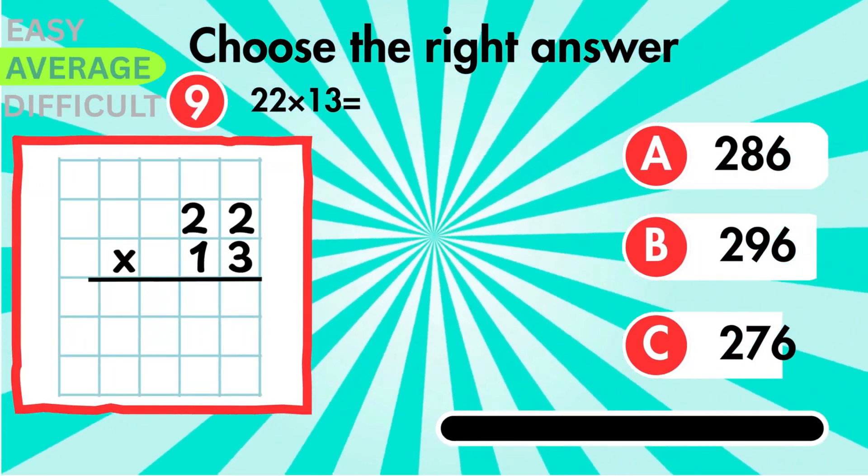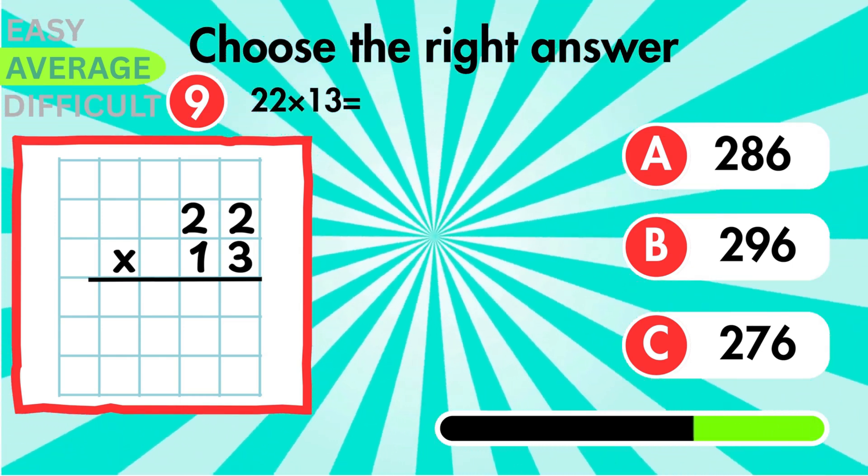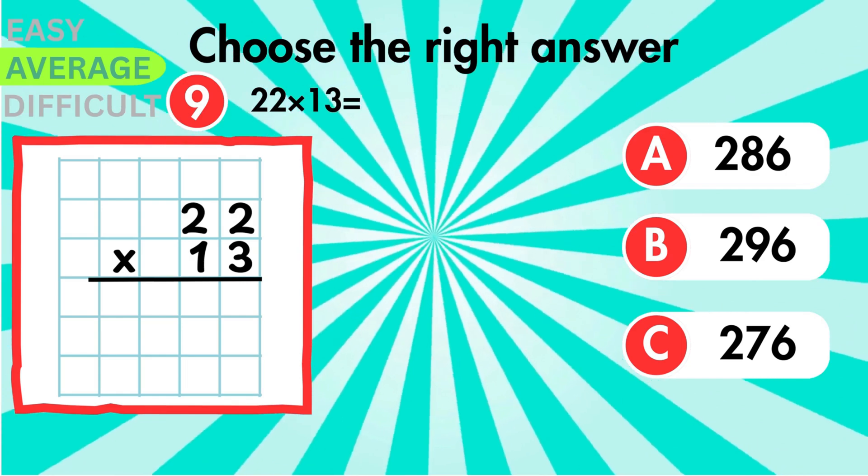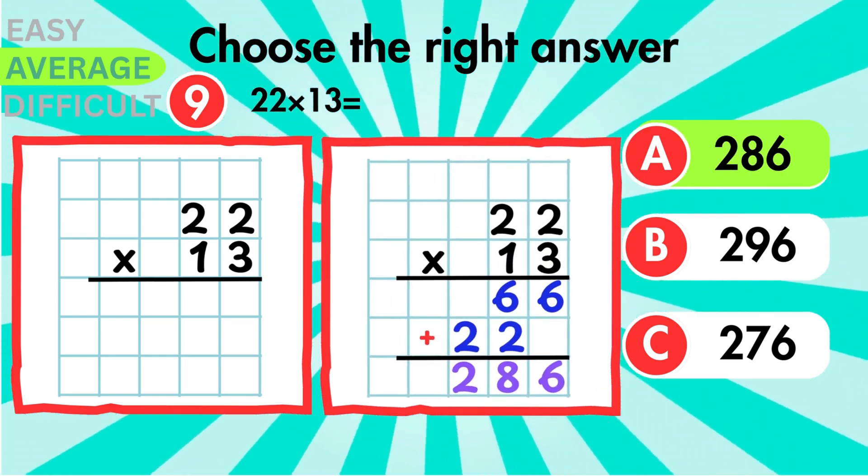We are doing 22 multiplied by 13. What is the grand total of the two rows? You should get 286.